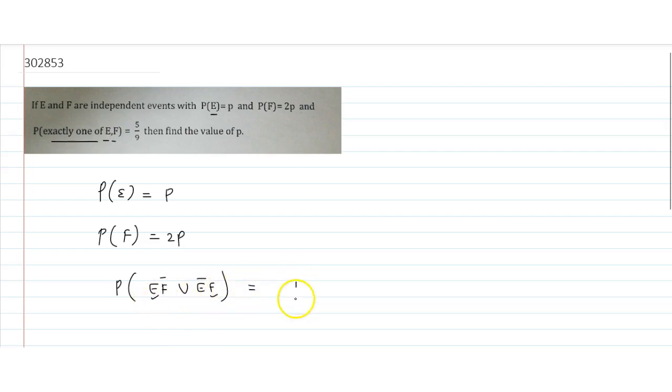So how can we write this? Exactly one should occur. So we write P(E occurs and F does not occur) plus exactly one should occur, so E does not occur and F occurs.